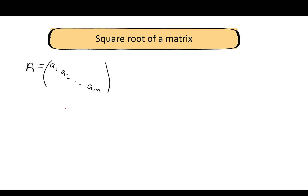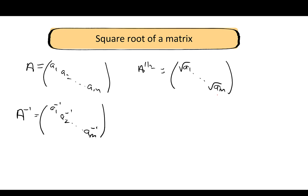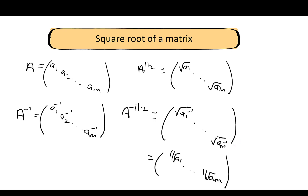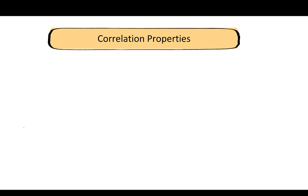If A is a diagonal matrix, we only write the diagonal elements (all off-diagonal elements are zero), and the square root of A is simply the matrix with the square root of each diagonal element. The inverse A^(-1) is likewise the inverse of each diagonal element. So D^(-1/2) can be computed straightforwardly, allowing you to verify the correlation matrix formula from the previous slide.